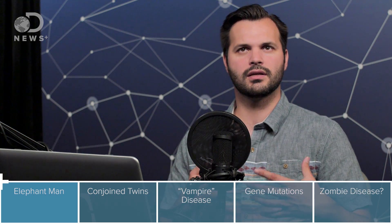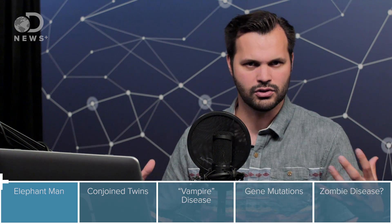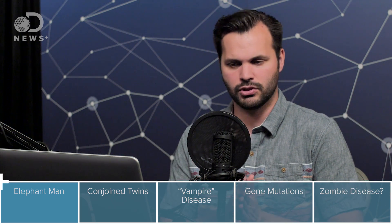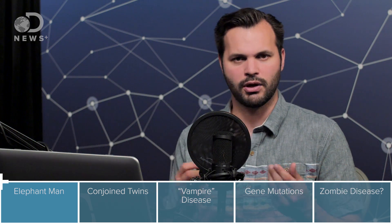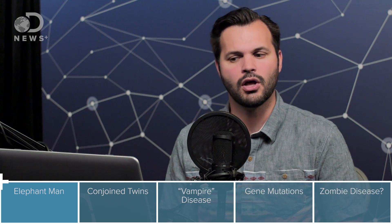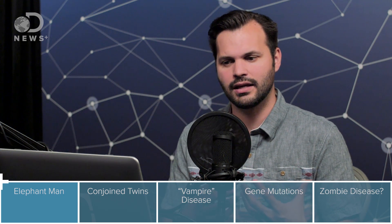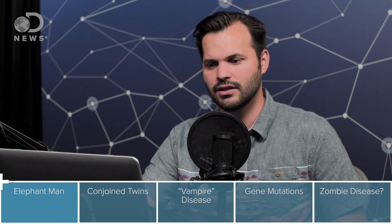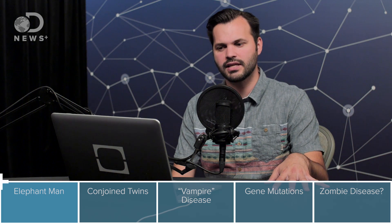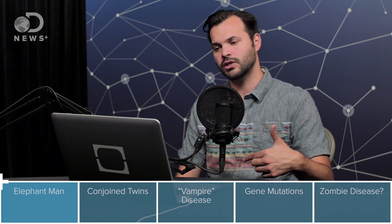Lymph is a system in the body that transports immune cells around and also cleans your body. It's separate from the circulatory system. And when lymph accumulates too much, it causes swelling, especially in the lower parts of the body like legs and ankles, but it can also happen in the hands, face, head, breasts, and in both genitalia of male and female. There are two types: filarial elephantiasis, which comes from microscopic parasitic worms transmitted through mosquitoes.